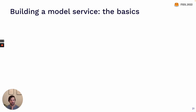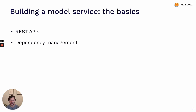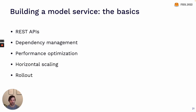In this next section we'll talk through the basics of how to build your model service. There are a few components: we'll talk about REST APIs, which are the language your service will use to interact with the rest of your application; dependency management, including how to deal with different versions of PyTorch or TensorFlow; performance optimization to make it run fast and scale well; rollout — how to get the next version of your model into production; and finally managed options that solve a lot of these technical problems for you.